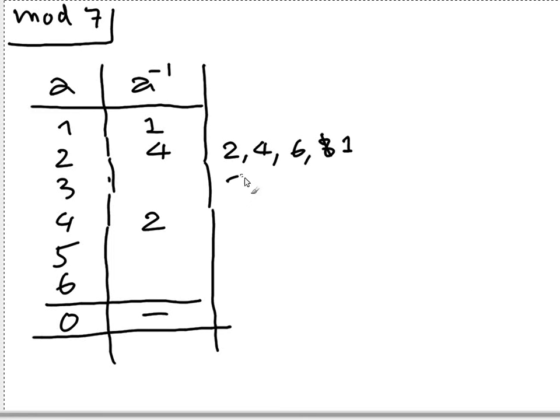3 times 1 is 3, 3 times 2 is 6, 3 times 3 is 9 which is 2. 3 times 4 is 12 which is 5, and 3 times 5 is 15, 15 is 1 mod 7, so this is 5, we get this.